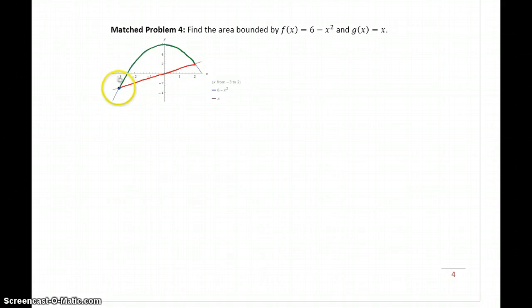So what we need to do is figure out what point this is and what point this is. Looking at the graph, this appears to be x = -3, and this appears to be x = 2.